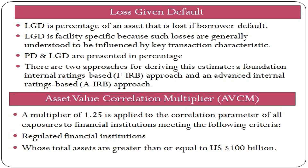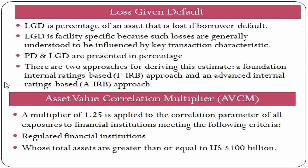Now let's move on to LGD. LGD is the amount of loss which a bank will suffer in case an obligor fails to meet his obligation. The difference between PD and LGD is that in PD we estimate the probability of a counterparty's default, whereas in LGD we estimate the amount of loss if that counterparty actually defaults. Both PD and LGD are presented in percentage. LGD is facility-specific because such losses are generally influenced by key transaction characteristics such as how much collateral we have, type of collateral, and degree of subordination. For example, if a client defaults on a 1 crore loan and we can recover 75 lakhs from the collateral, then LGD would be 25% as the loss is 25 lakhs.